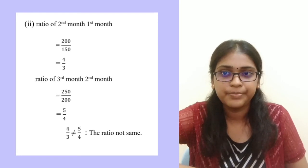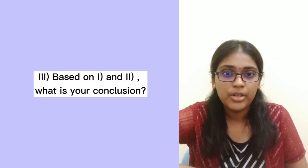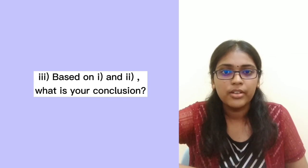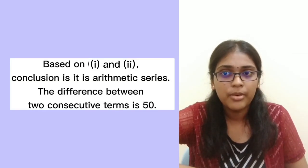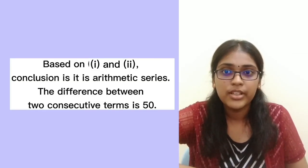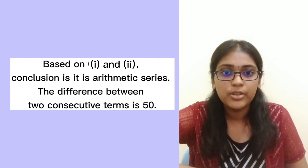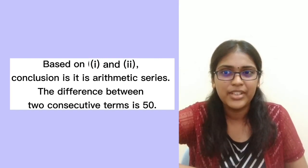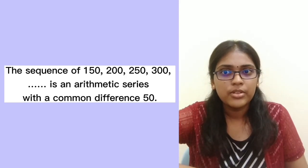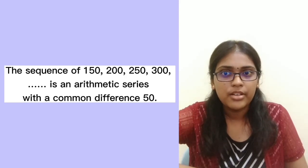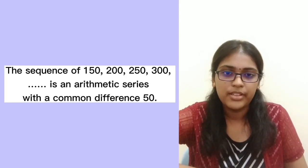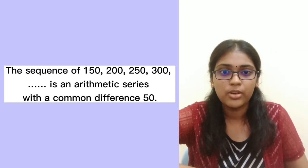Based on Roman numeral 1 and Roman numeral 2, the conclusion is: this question is an arithmetic series. The difference between two consecutive terms is 50. So the sequence 150, 200, 250, 300 is an arithmetic series with a common difference of 50. Thanks for watching. Thank you.